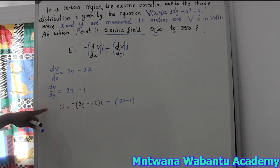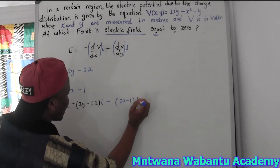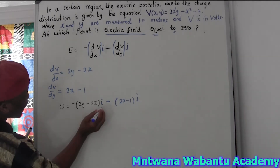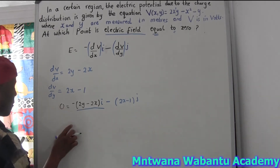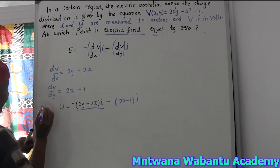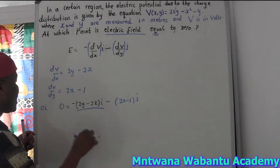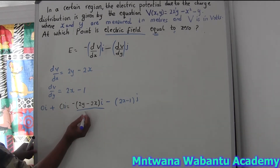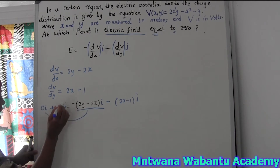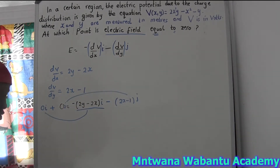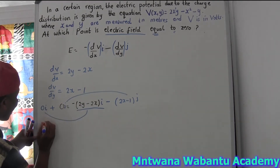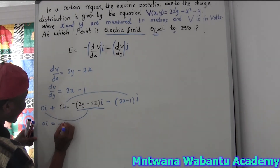Whenever you deal with vectors or complex numbers, you can compare components. Since I don't have an î term on the left, I write 0î, and since I don't have a ĵ term on the left, I write 0ĵ. Then I compare: î with î, and ĵ with ĵ. This gives us the values of x and y.